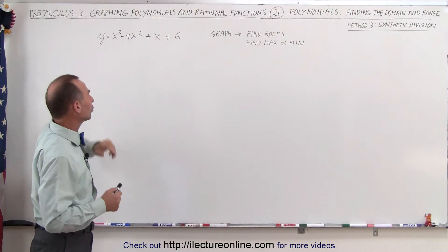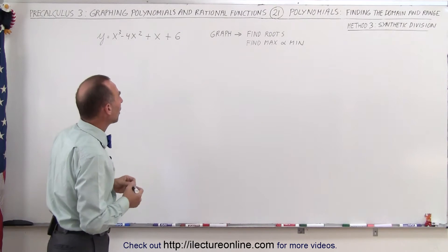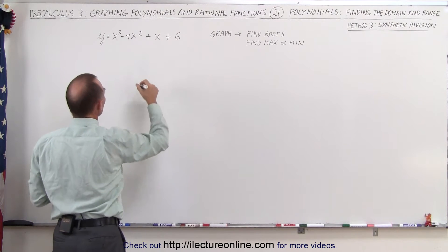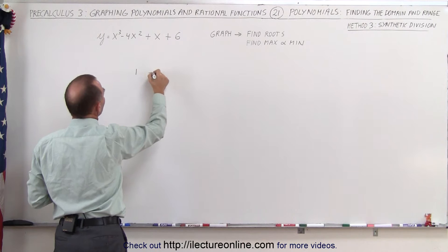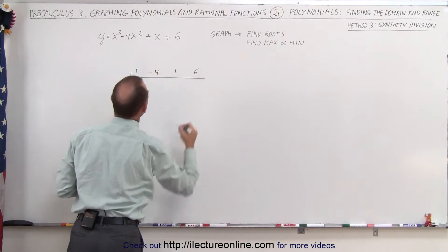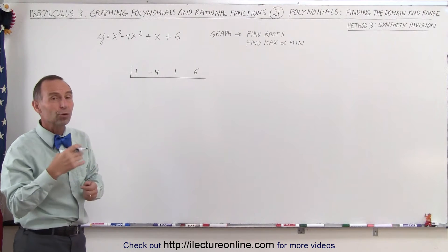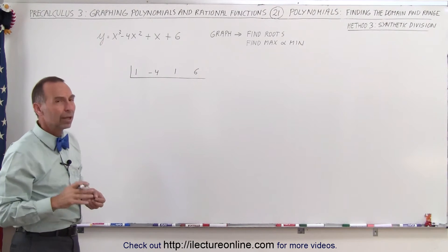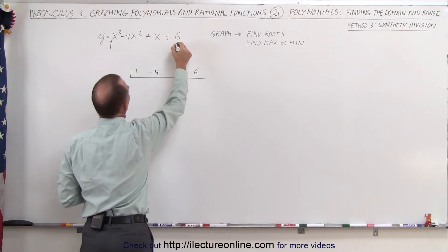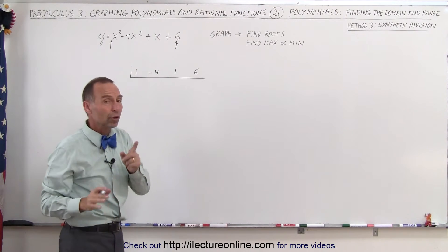We look at our polynomial. This is a third order polynomial, and there's a kind of a trick to it. We find the coefficients of each of the four terms in this polynomial and write them down. So we have 1, negative 4, 1, and 6. Draw a line underneath it. Now we want to try some numbers that we want to plug into x to see if that will give us the root, or one of the roots to the equation.